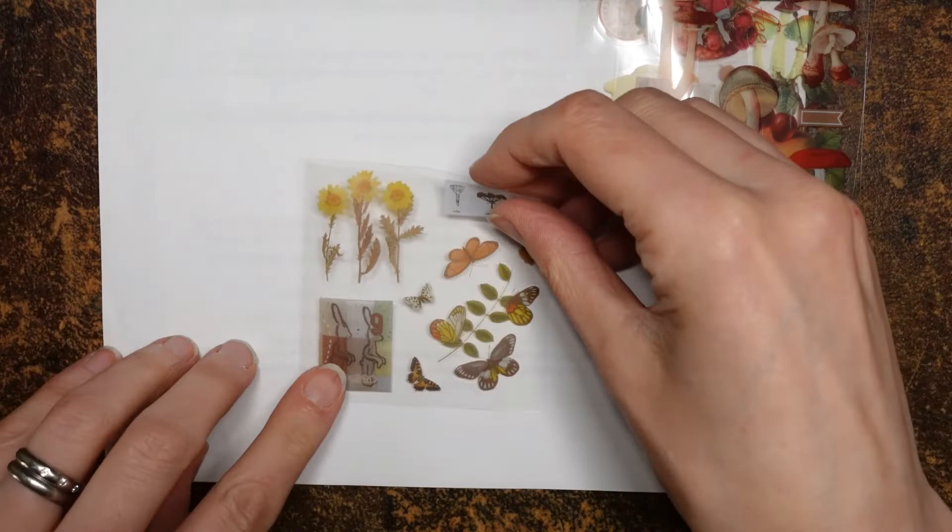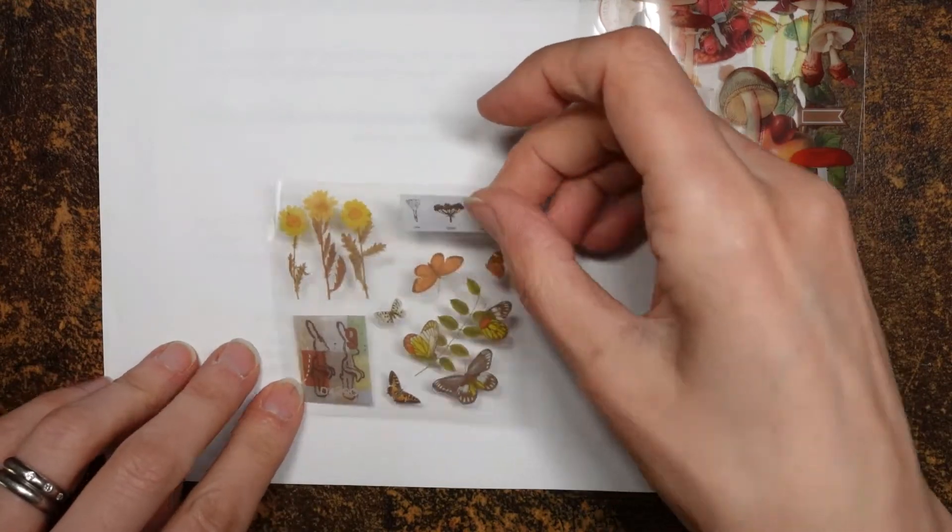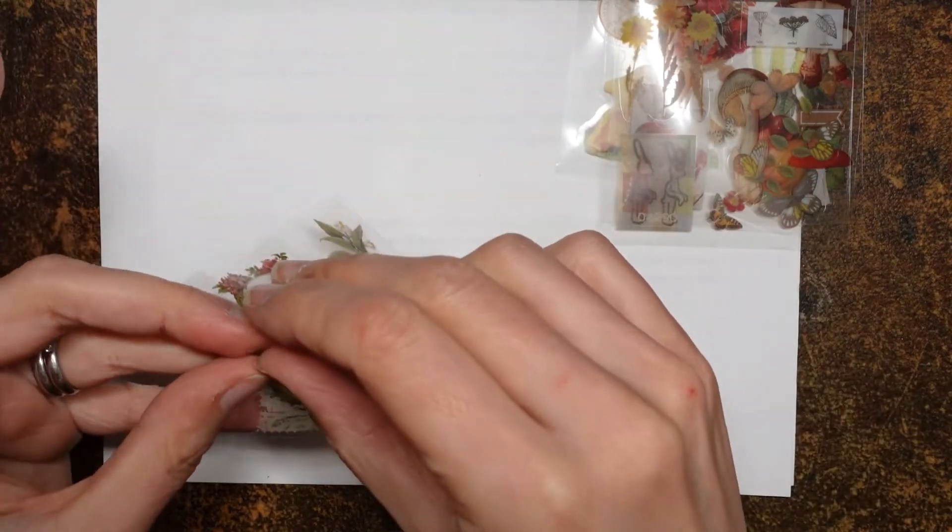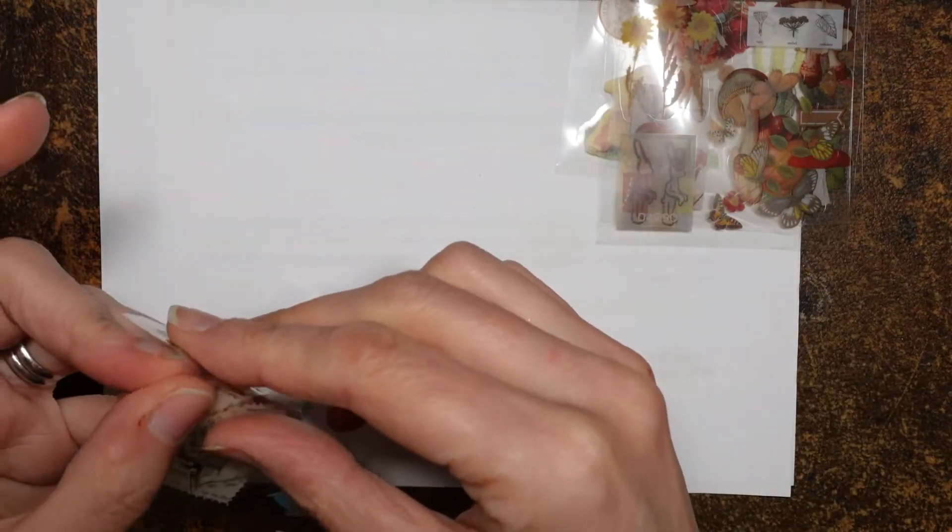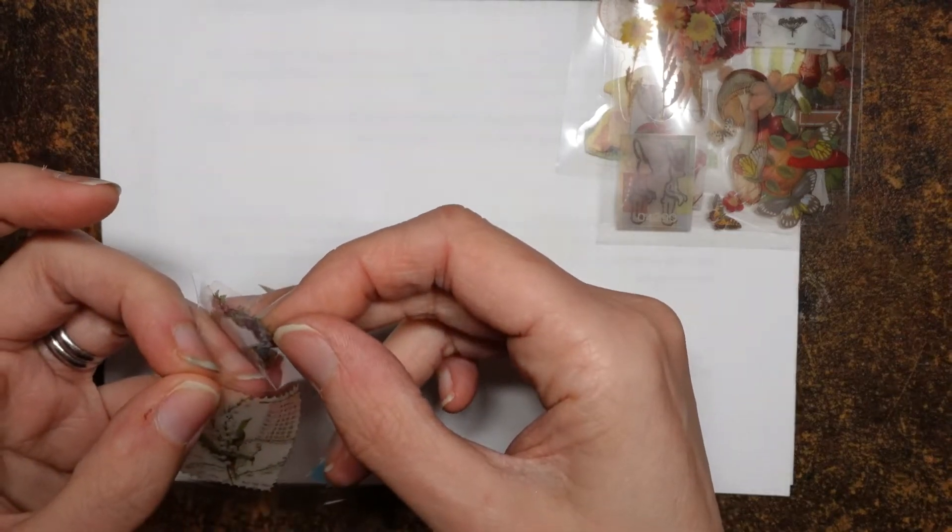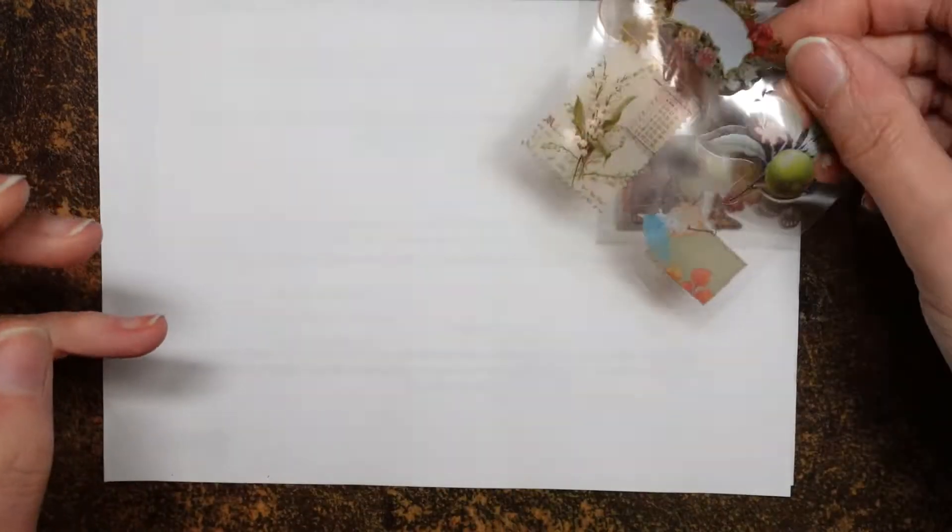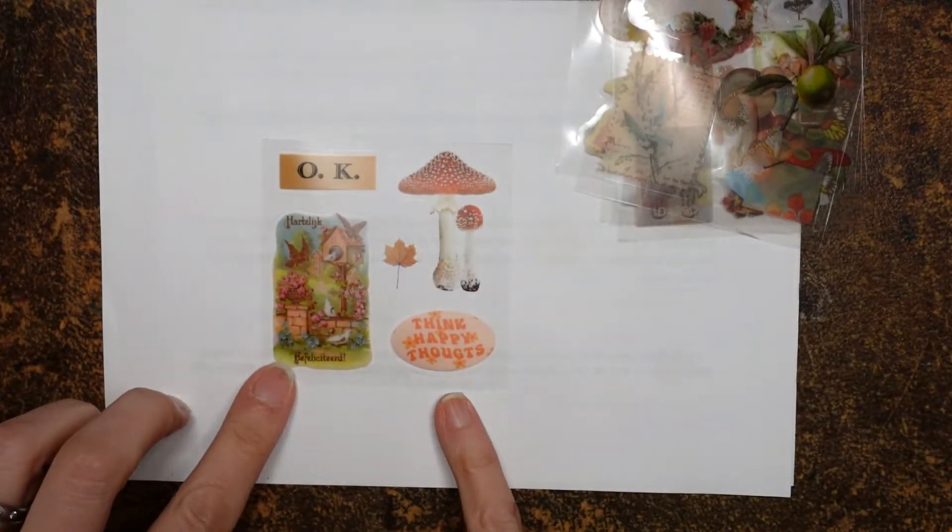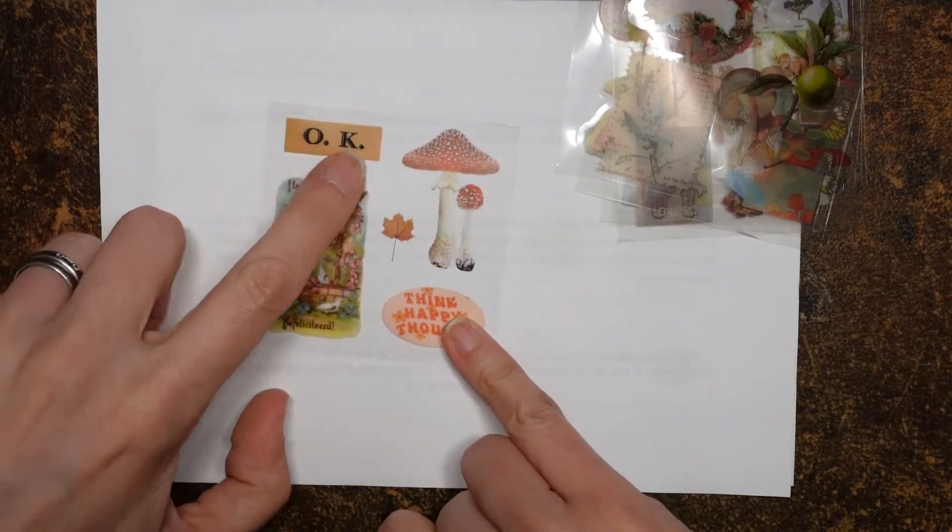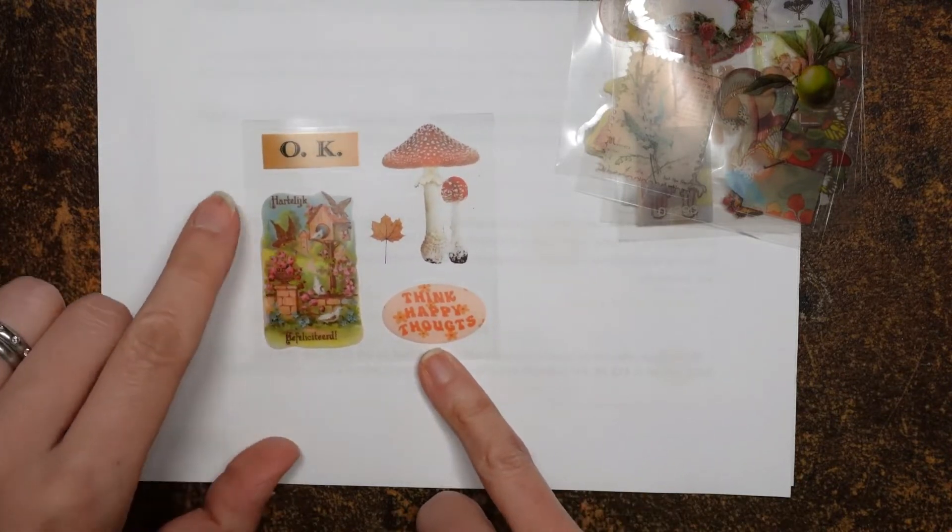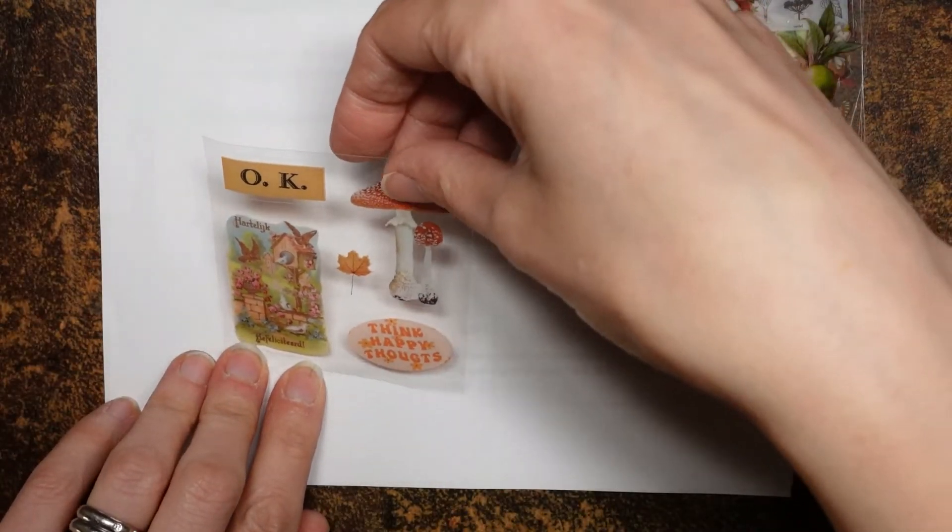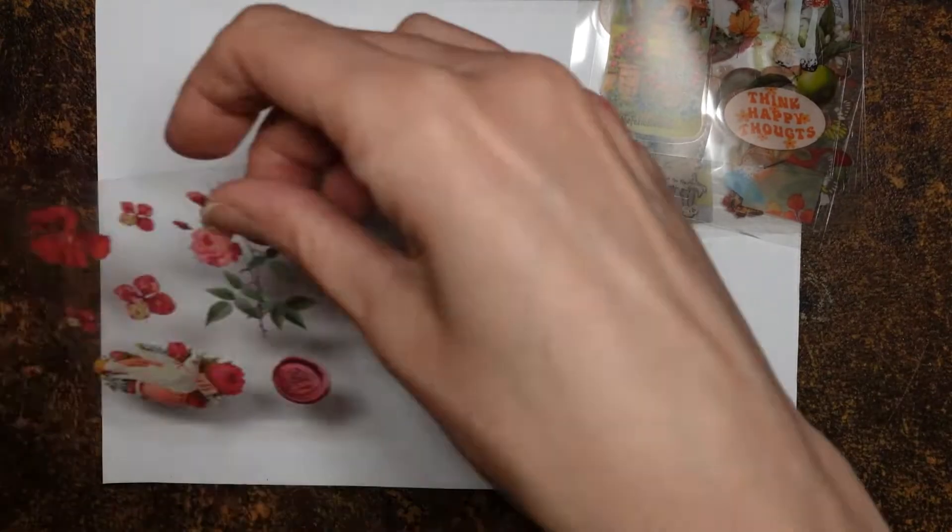So these would be good for journaling, scrapbooking, notebooks. As I said, cards. If you card make. And I'm trying to think how they come off. It's quite easy to remove. This says think happy thoughts. But on this one, and that says okay. But on this one, there's some foreign language. I don't know. Can't even guess what it is. I'm afraid. It's a very pretty picture. I like this sort of vintage look, I suppose.